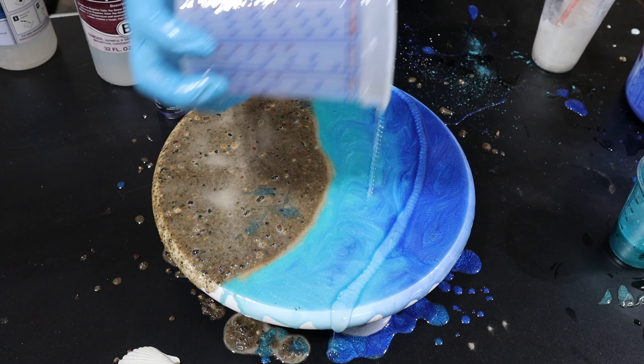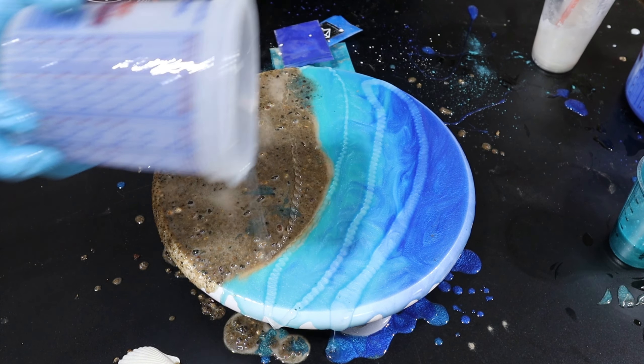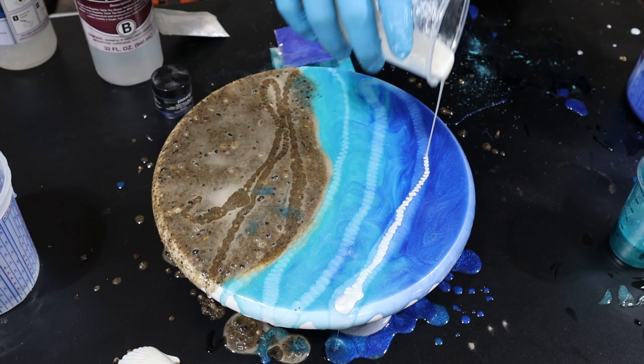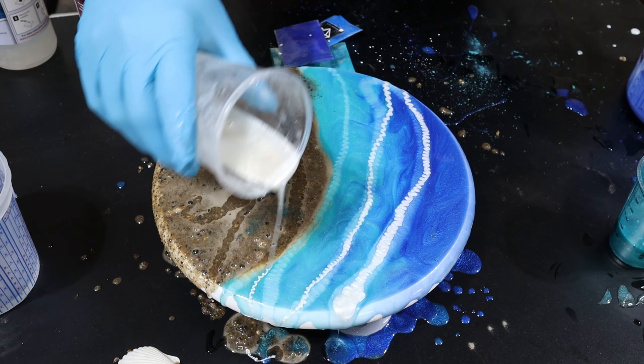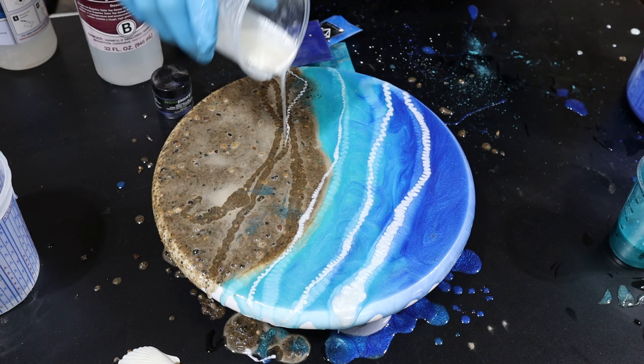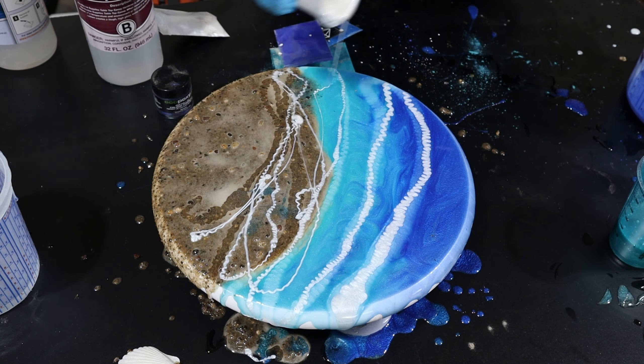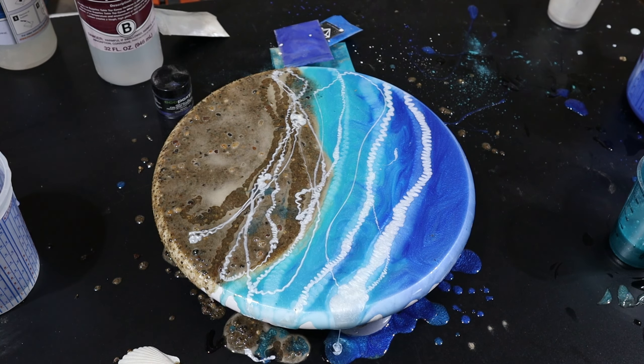So grab that clear epoxy and go ahead and put some of this over the surface of the sand and the blue pigment, and then take the white and go right on top of that. The clear is basically just separating the white from the colored epoxy and that way it doesn't blend in as much and it more sits on the surface. It gives it kind of a wave texture.